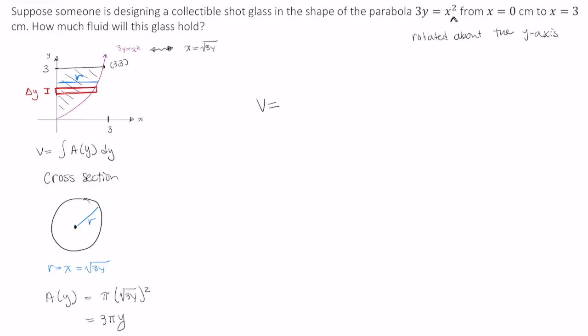The volume equals the integral from 0 to 3 of 3πy dy. This gives us 3π(y²/2) from 0 to 3, which works out to be 27π/2 cubic centimeters.